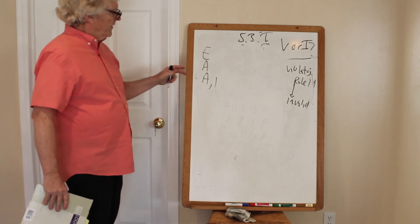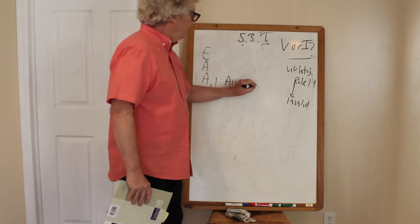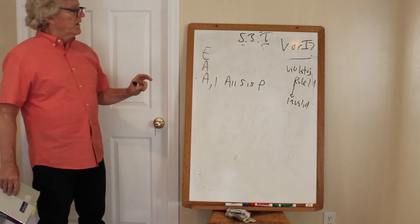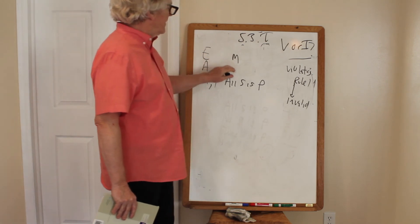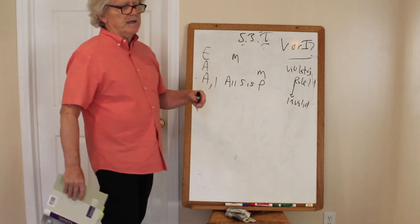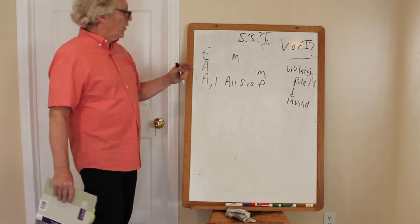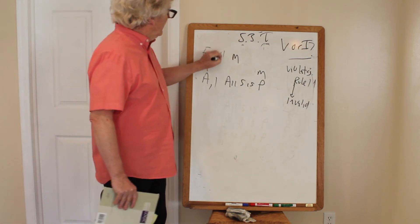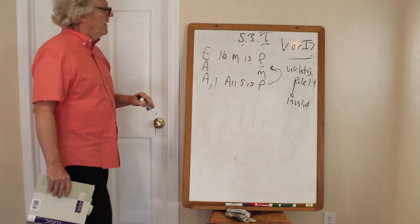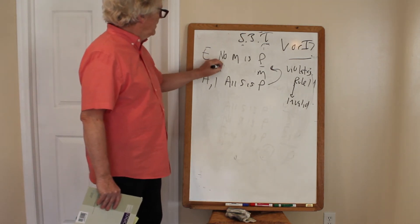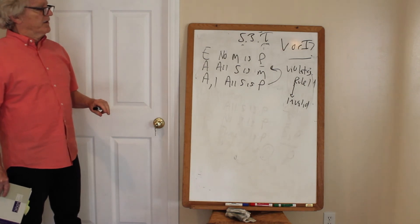I like to start with the conclusion first. All S is P is the conclusion. Figure one: M is in the subject place the first time and the predicate place the second time. So E gives us: no M is P — P is the major term in the first premise. The second premise, all S is M, is universal affirmative.